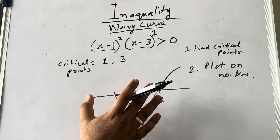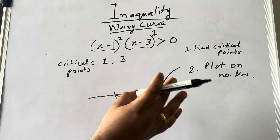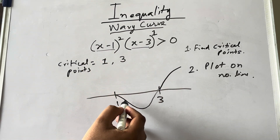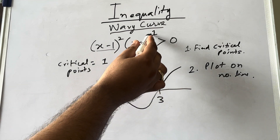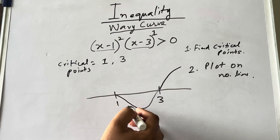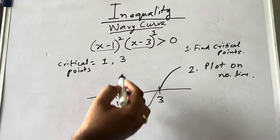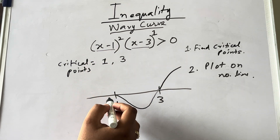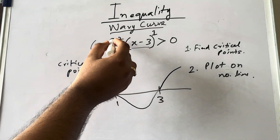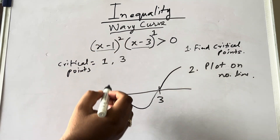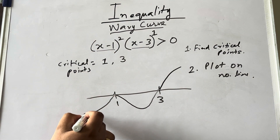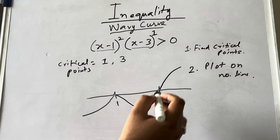So from 3, power is odd — we were on the plus side, we changed to the minus side. Now we go to point 1. At 1, the power of (x − 1) is 2, which is even. For even power, you remain on the same side. So I remain on the minus side.